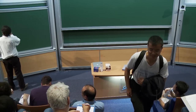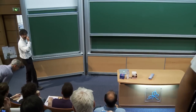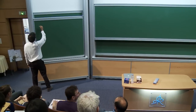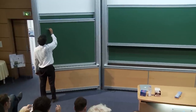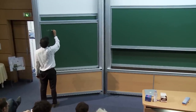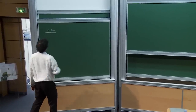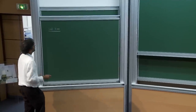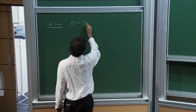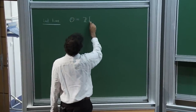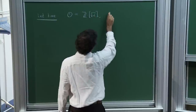Let me remind you quickly at what point we were yesterday. We discussed that O is an order in imaginary quadratic fields, something like Z[sqrt(D)], where D is less than 0.